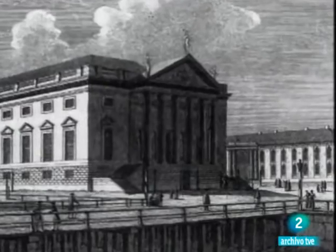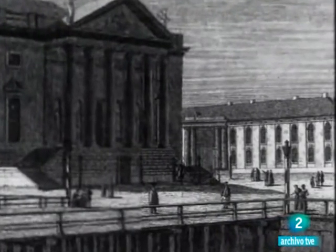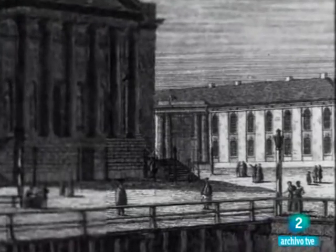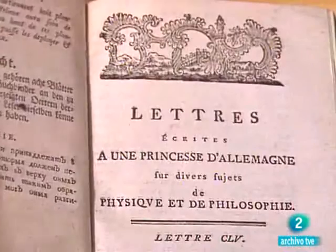En 1741, Euler es fichado por Federico el Grande de Prusia para la Academia de Ciencias de Berlín. Allí vivió hasta 1766, admirado y reverenciado por toda Europa.